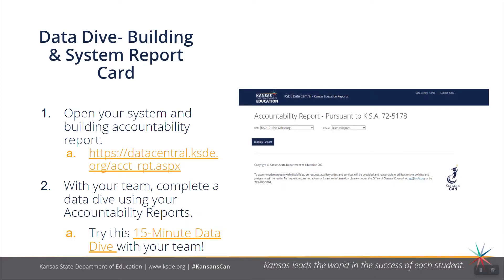To start, we will talk about student performance. One place you can start is by examining your school or district accountability report curated by KSDE. You can access it by clicking on the link here, or you can also access it by going to KSDE.org and clicking on the large accountability report icon on the right-hand side of the page. After you access your building or system report, we encourage you to engage in an initial data analysis. Attached to this slide, you will find a 15-minute data dive template that can be used for quick reviews of data.